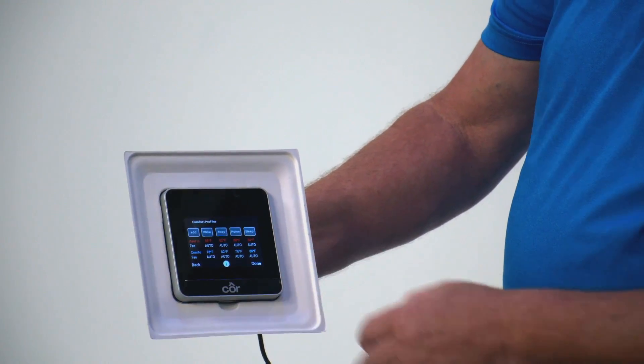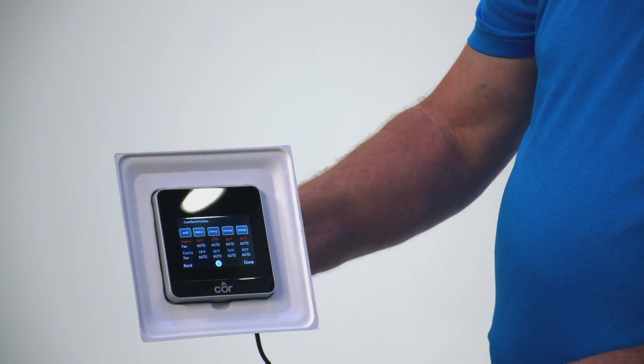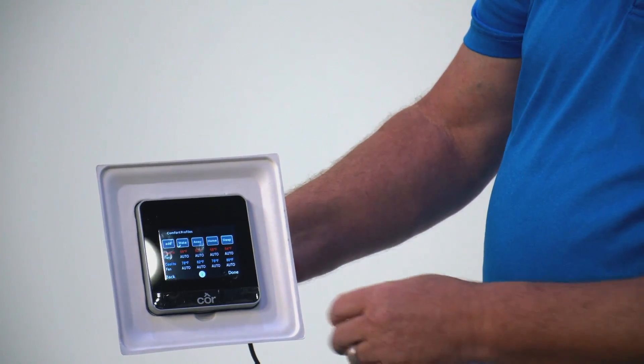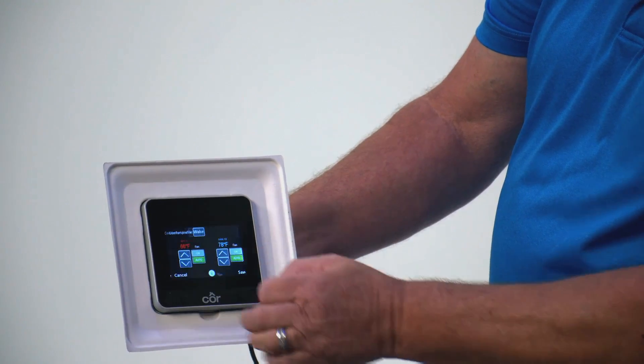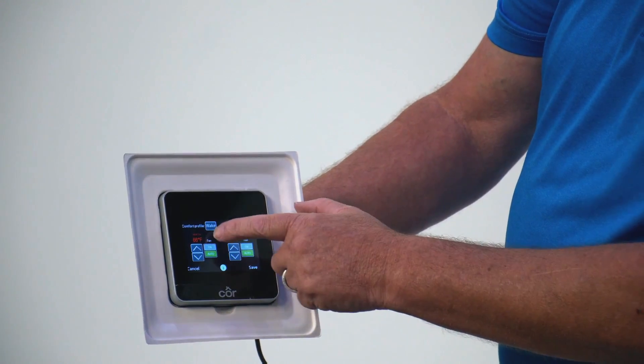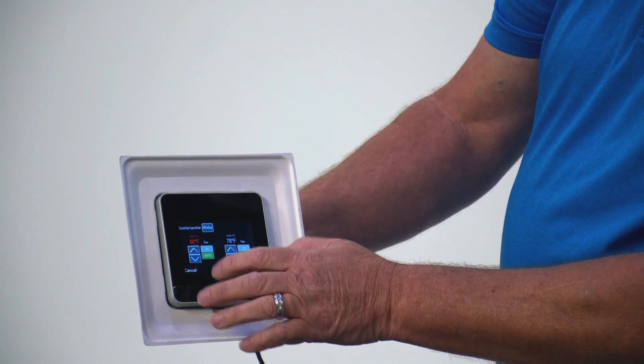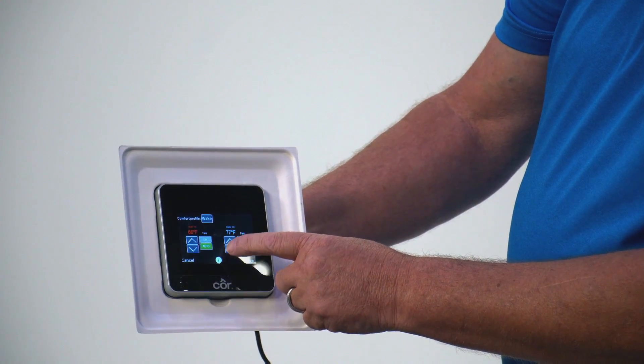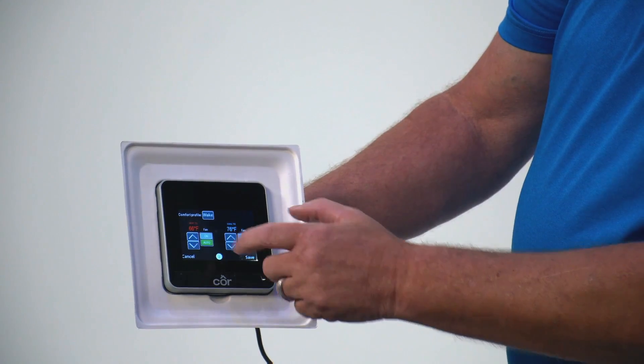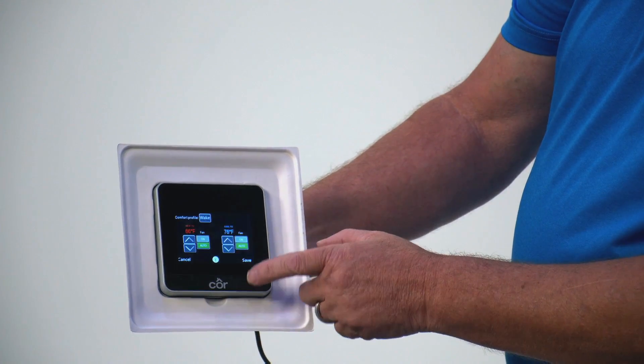And so when it comes to scheduling, I can schedule these by day of the week, time of the day, and up to four different periods. Here, this would be your wake time. It's telling you that you want it to be 78 degrees when you wake up, or you can adjust it to 76. And then you press save.